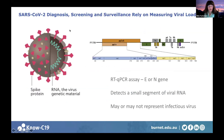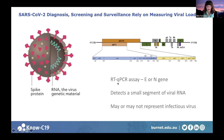SARS-CoV-2 diagnosis, screening, and surveillance relies on measuring viral RNA, achieved using an assay called RT-qPCR — reverse transcriptase quantitative polymerase chain reaction. This measures the number of copies of viral genetic material present in the sample — ideally the genetic material within the virion, but it could also include cellular debris.